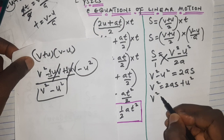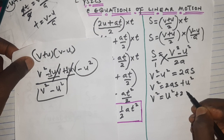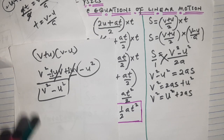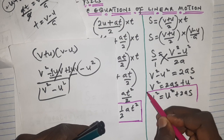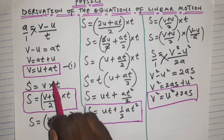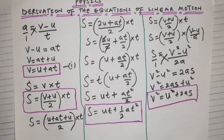Making v² the subject: v² = 2as + u², which we rearrange as v² = u² + 2as. That's the last equation proved. So we have all three equations of linear motion — very useful and exactly what we need.